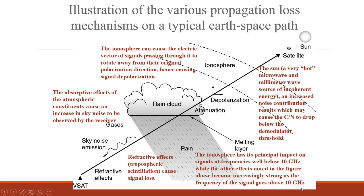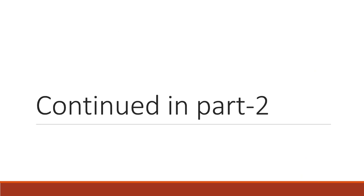As frequency increases above 10 GHz, attenuation losses and absorption by oxygen increase, whereas below 10 GHz these attenuation losses are less but ionospheric effects such as scintillation are more prominent. We will continue with more propagation effects and study all these effects in detail in Part 2. Thank you.